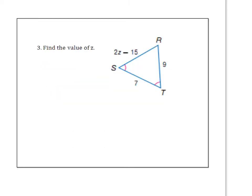So please pause the video and try number 3. See if you can solve this for Z. When you're done, unpause the video. So what I notice here is the 2Z minus 15 should equal the 9, because we have two equal sides or two equal angles, we should have two equal sides. We will not use the 7 for this problem. It's extra information. Add your 15. You have 2Z equals 24. Divide by 2, Z equals 12.